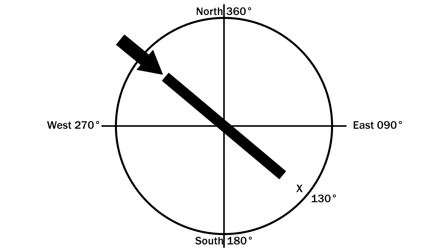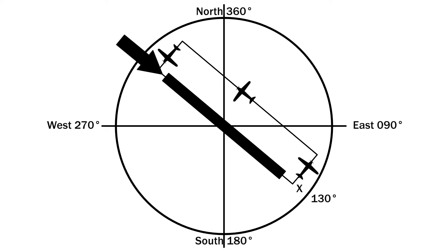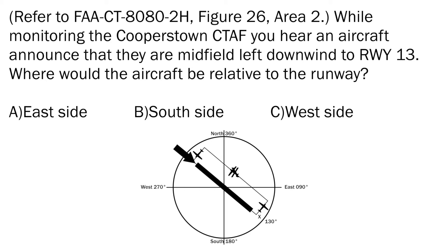The aircraft is making left-hand turns, so draw that rectangle with left-hand turns — this is the traffic pattern path over the ground. Downwind means the aircraft is parallel to the runway, facing the opposite direction of where it will land. Put an X on the downwind leg — that is where the aircraft is when it announces left downwind for runway 1-3. Our choices are east, south, and west. Not south, not west. The east side is the only matching option and is the correct answer.